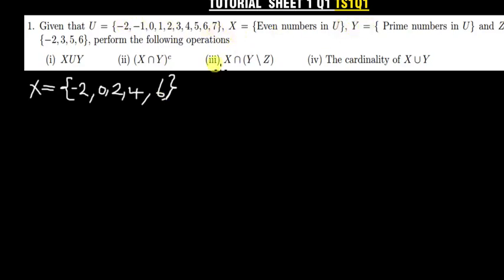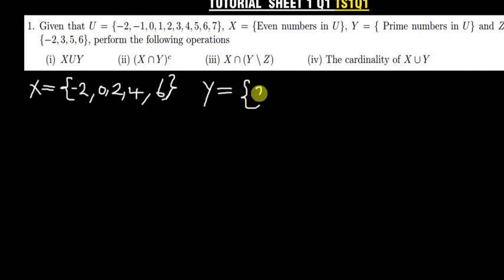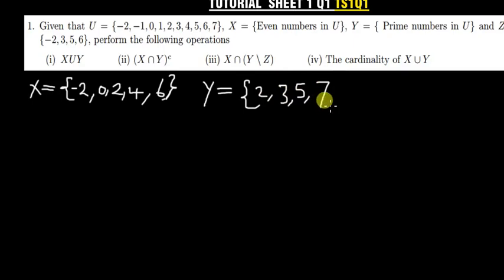We also list Y. Y is equal to all the prime numbers in U. The prime numbers we have are 2, 3, 5, and 7. These are the prime numbers in the universal set. And then lastly we have Z, which has already been listed.